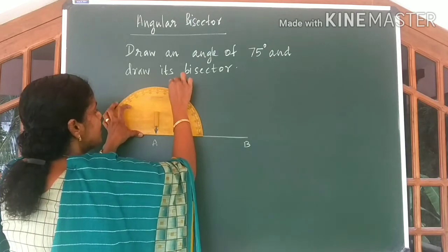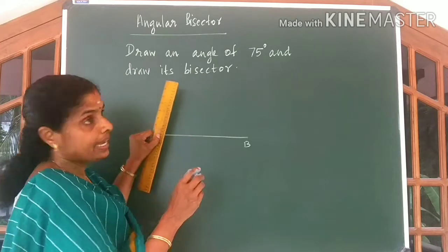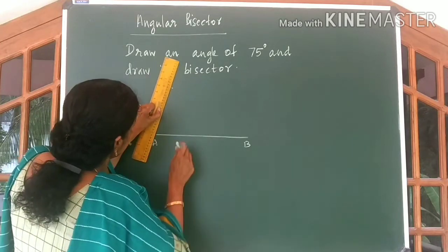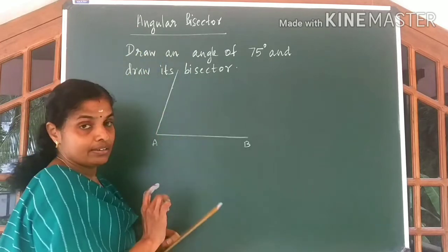Now keep your protractor at the point A and measure 75 degrees. So here 75 degrees I have marked. Now use your scale to join this line. So you got a line.